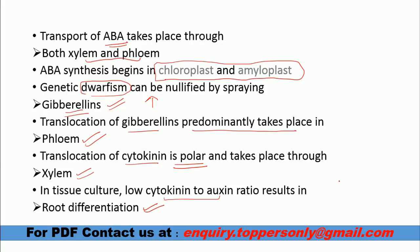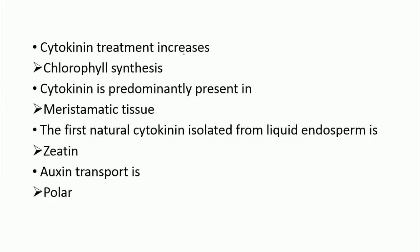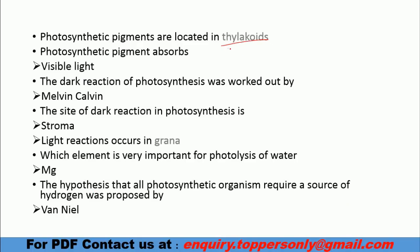In tissue culture, the ratio of cytokinin to auxin is very important. If cytokinin is greater than auxin, root differentiation occurs. If auxin is greater than cytokinin, shoot differentiation occurs. Cytokinin treatment also increases chlorophyll synthesis. Cytokinin is predominantly present in meristematic tissue. The first natural cytokinin isolated is zeatin. Auxin transport is polar.